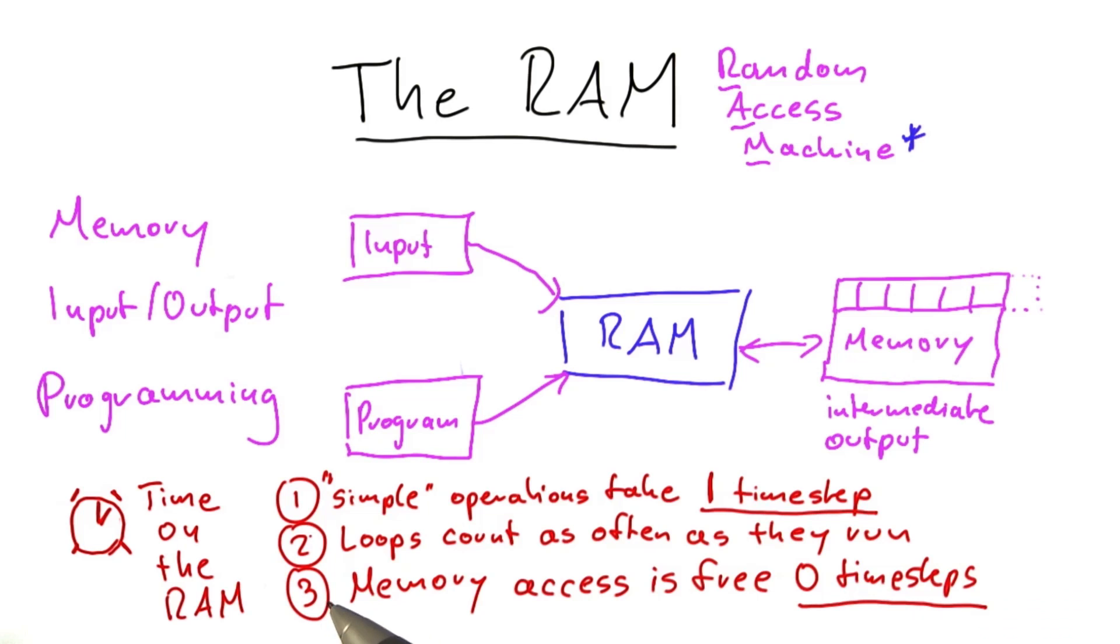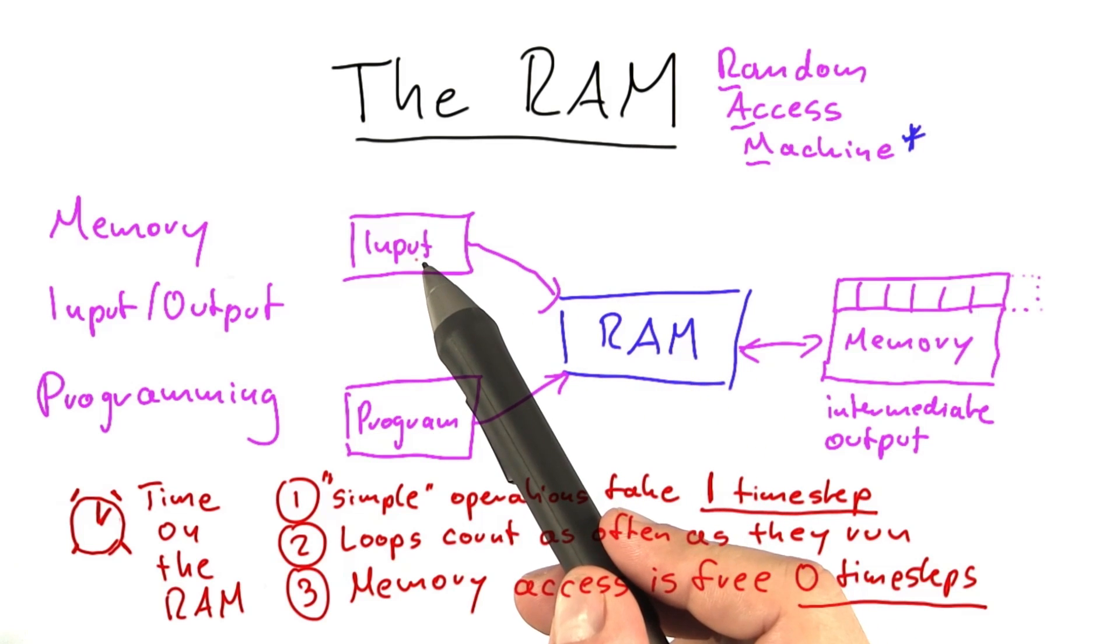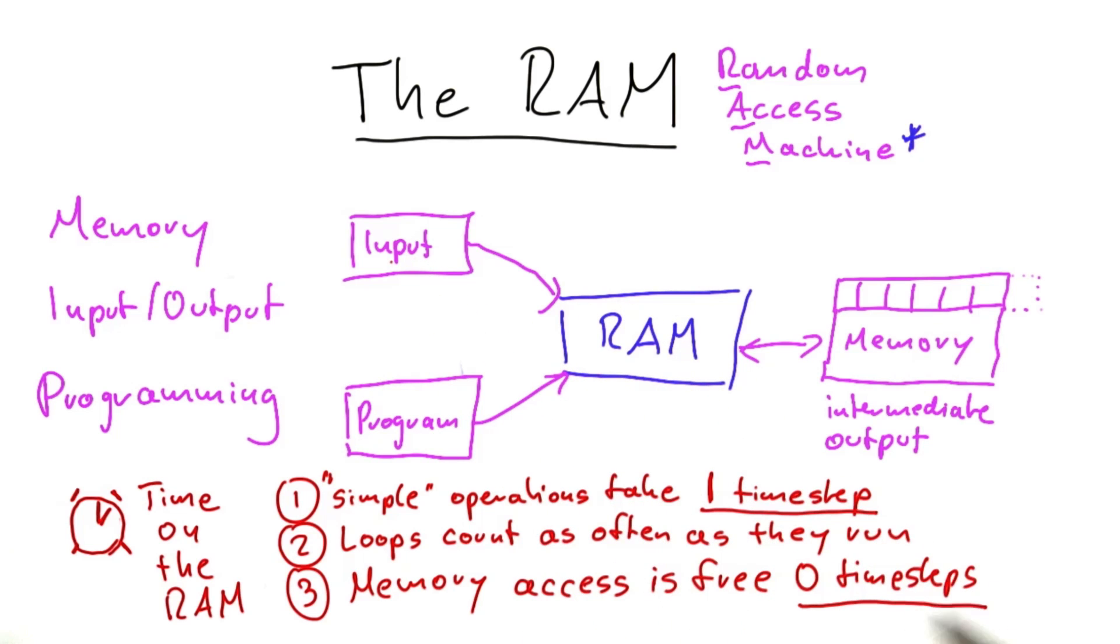And these three rules give us a simple way of determining the running time of an algorithm or program, or also of comparing the running time of two programs, because all we need to do is count the number of time steps that we expect the RAM to execute for a given input. So let's practice this for a little bit.